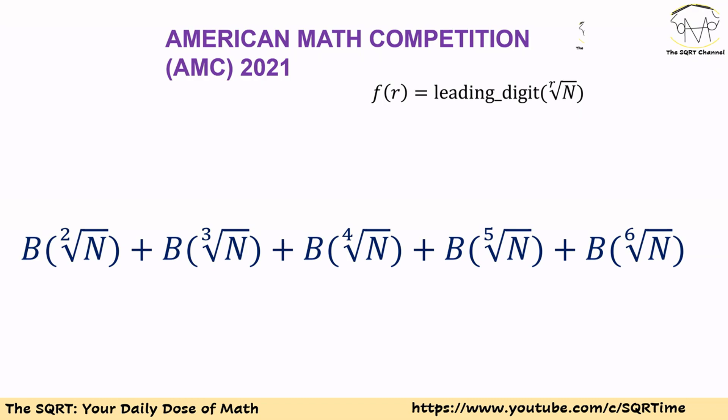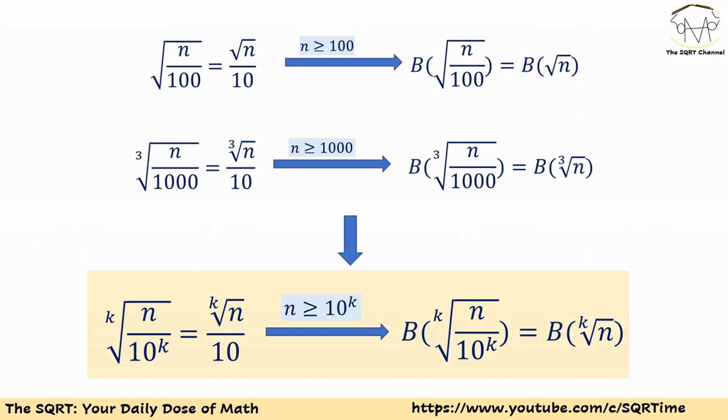Originally we were interested in f(r) for r between 2 and 6. Now with the new notation we are going to calculate b(x) for x equal to the square root of N, the third root of N, the fourth root of N, the fifth root of N, and finally the sixth root of N.